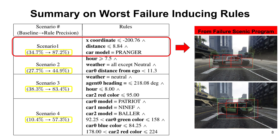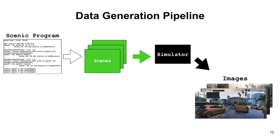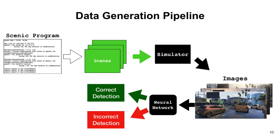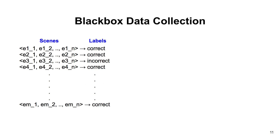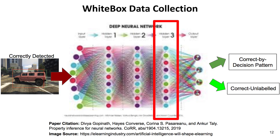So how are the rules being extracted? Let's take a look at our data generation pipeline. The scenes sampled from the Scenic program are inputted to the simulator to render images. These images are tested on the object detector to output binary labels, either correctly detected or not. This way, we can collect a dataset where sampled vectors from the Scenic program are paired with binary labels. This setting allows us to formulate the rule extraction as a classification problem. We also developed a white box approach. Using previous work, this white box approach was more effective at extracting success rules, while the black box approach was more effective at failure rules. For more details, please refer to our paper.